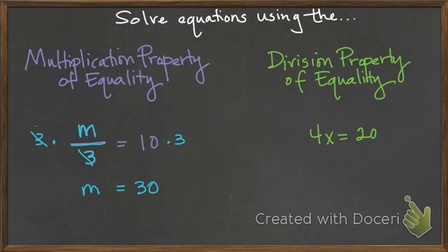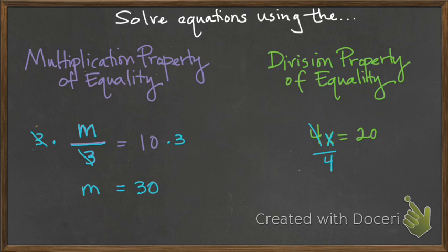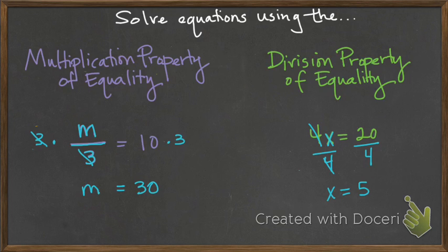For the one on the right, I want to solve for x, but x is being multiplied by 4. So I'm going to undo that by doing the inverse of multiplying, which is to divide. Because 4 divided by 4 is 1, and you have to do this on both sides of the equal sign. So I find out the answer x equals 5. The reason I was able to find that was I used the division property of equality, which allows me to divide both sides of the equation by the same number.